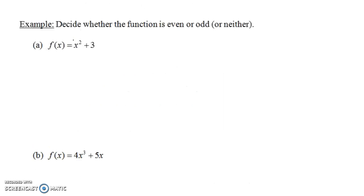So decide whether the function is even, odd, or neither. We have the function f of x equals x squared plus 3. What we need to do is check f of negative x and check: does that equal f of x? If it does, then we have an even function. Does it equal negative f of x? In that case, we have an odd function. Or is it neither of those things — neither even nor odd?